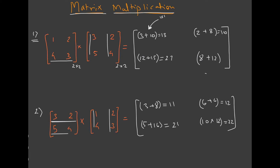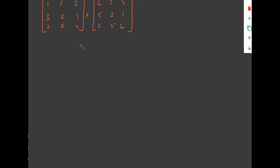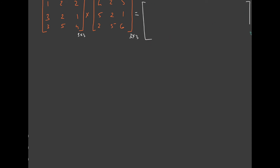Let's go on to one more example. We have a 3 by 3 matrix here — there are 3 rows and 3 columns. We multiply this 3 by 3 matrix with the second 3 by 3 matrix. The method remains the same: multiply the first row with the first column, second column, and third column, and those values go into the corresponding positions in the resultant matrix.